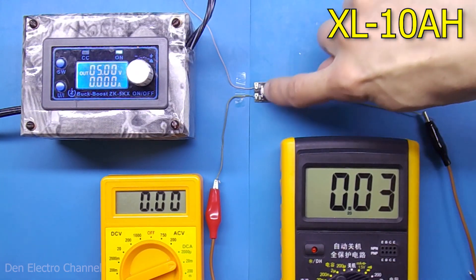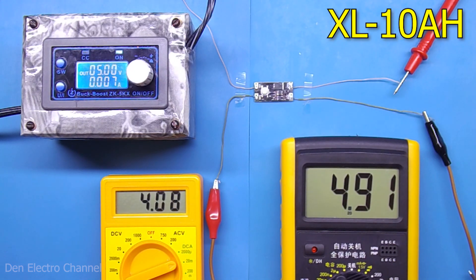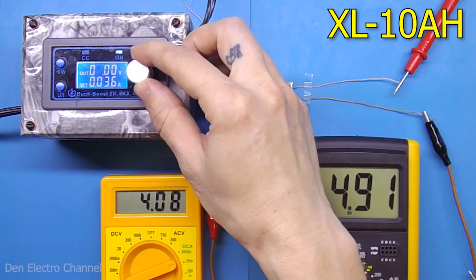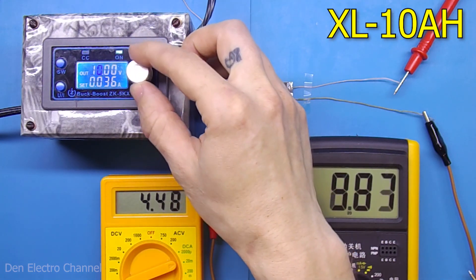For the second module, the high voltage one, everything is exactly the same. Only when turned on does it consume not 1 milliamp, but 4. I first took a measurement with a power supply of 5 volts, and then increased the voltage to 12. The current increased by only half a milliampere.